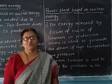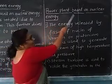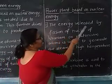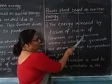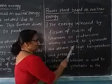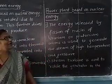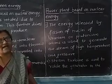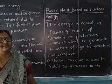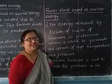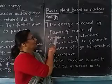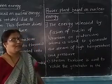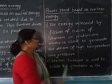Today we are going to learn about the nuclear power plant — a power plant based on nuclear energy. The energy released by the fission of the nuclei of uranium or plutonium atoms is used to generate steam. Here, the uranium or plutonium atoms undergo nuclear fission, and this fission is used to generate steam for the power plant.